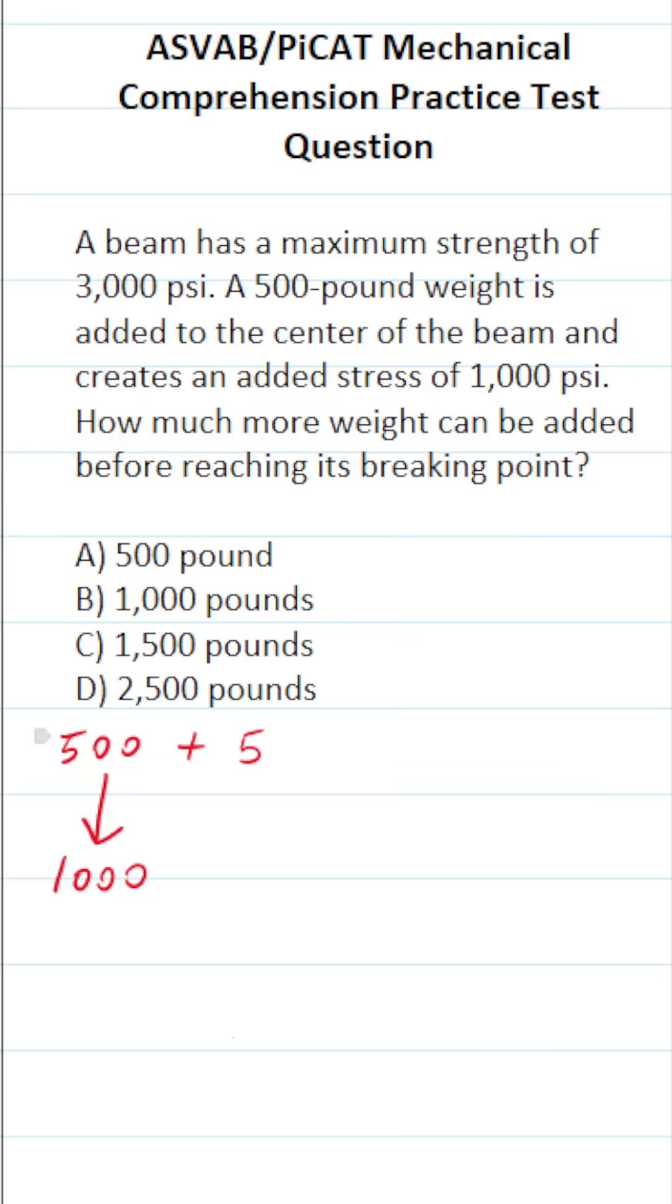So if we add another 500-pound weight, that's going to add another 1,000 PSI of pressure. So right now, we have 1,000 pounds on the beam, and that equates to 2,000 PSI of pressure.